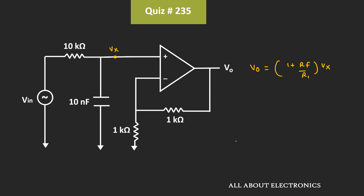The output voltage Vout can be given as (1 + Rf/R1) times Vx, where both Rf and R1 are 1 kΩ. That means Vout = (1 + 1/1) × Vx, which gives Vout = 2Vx.